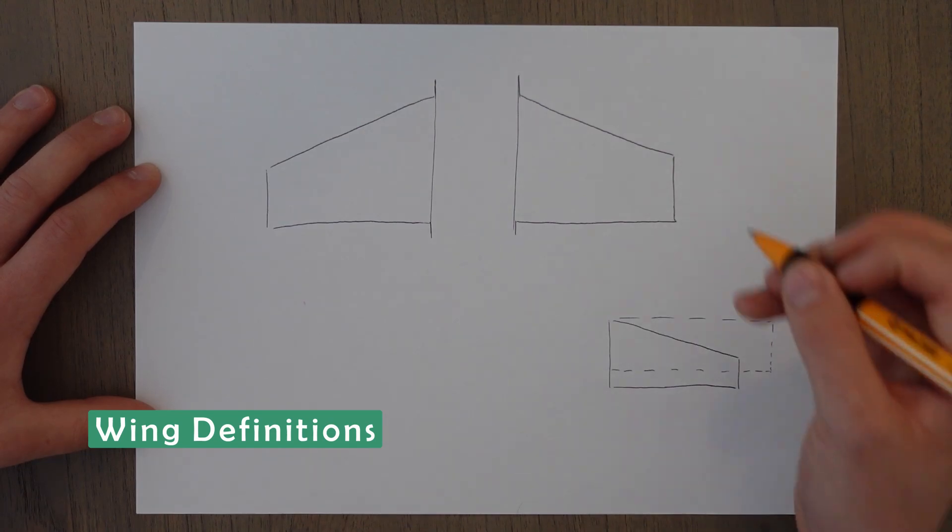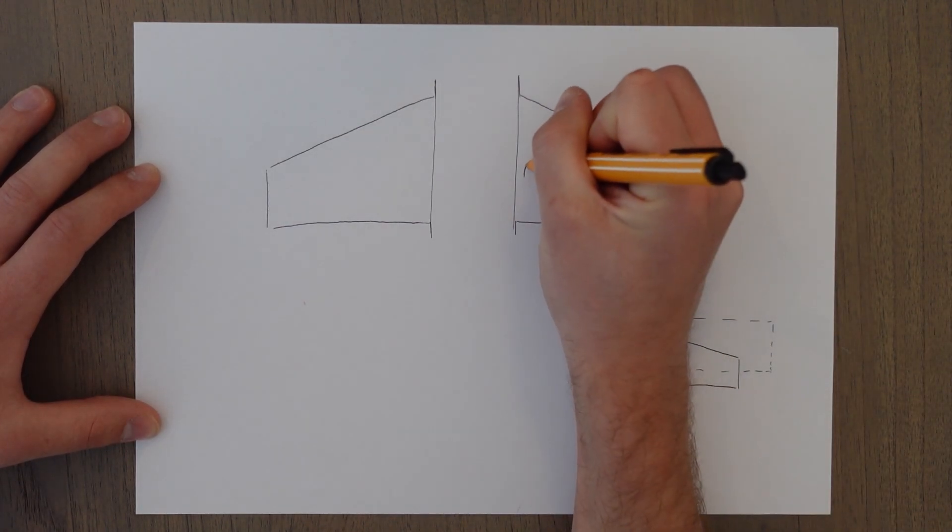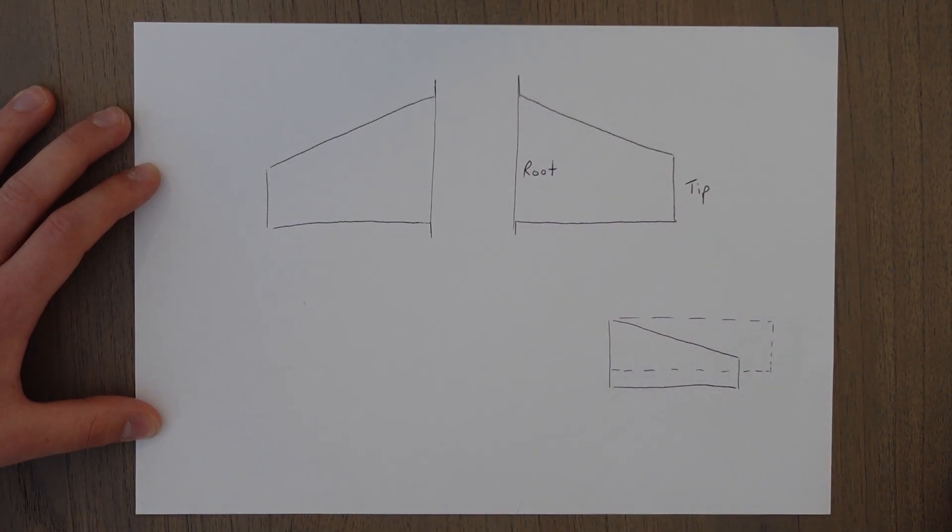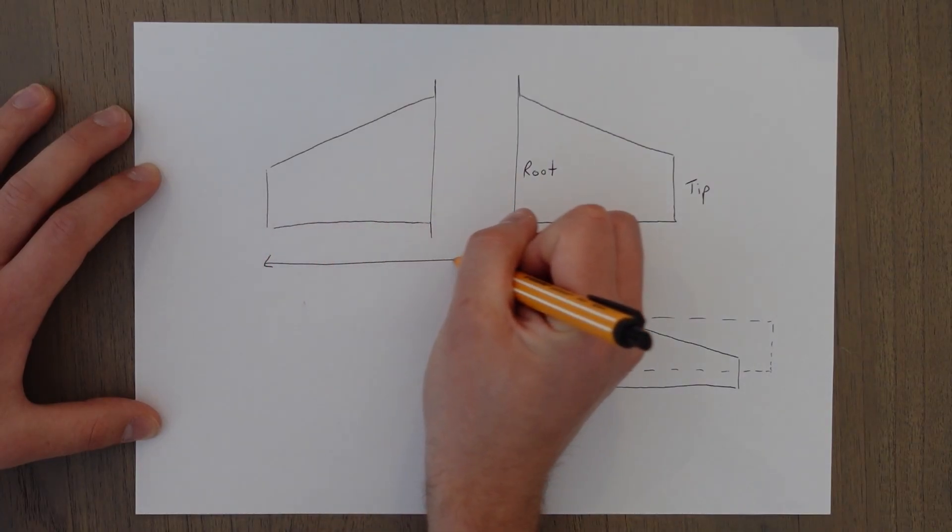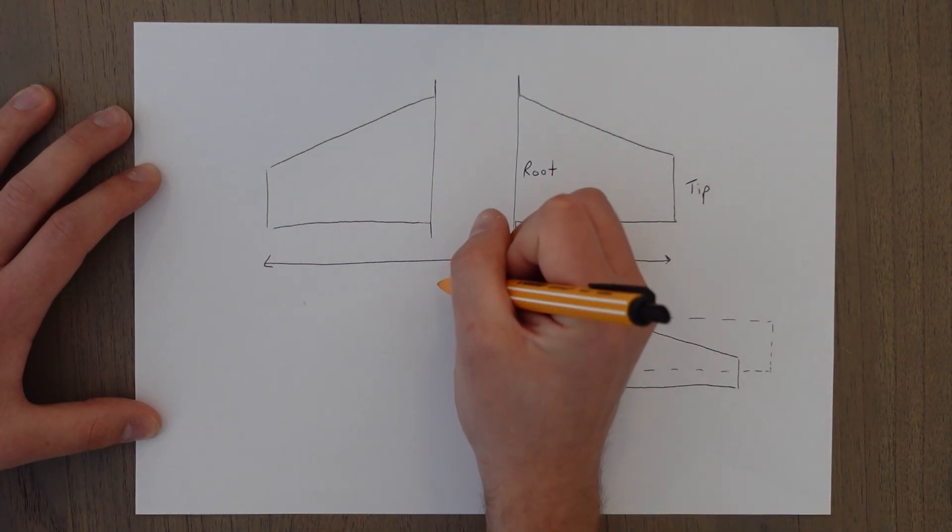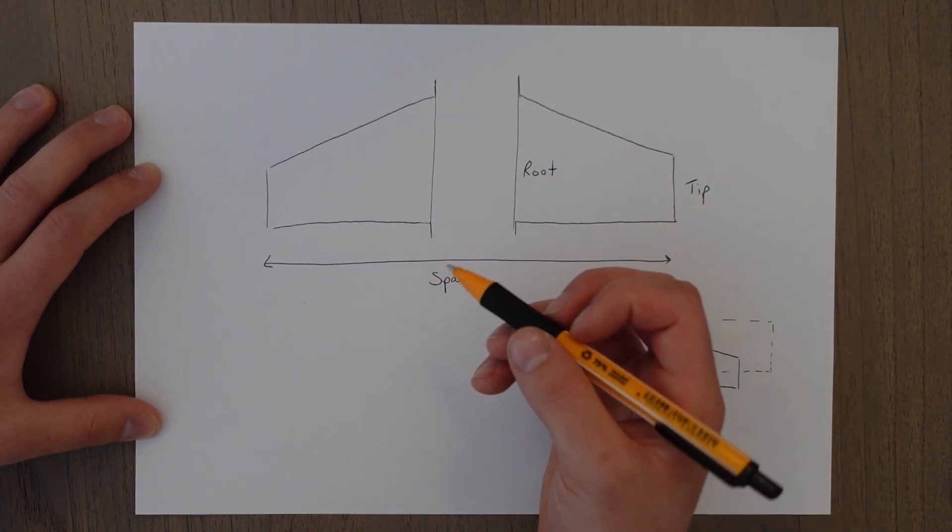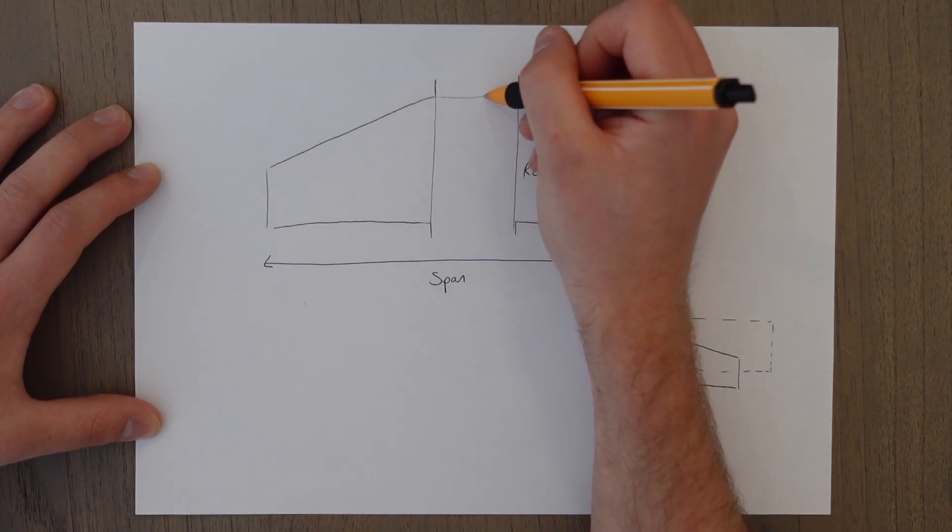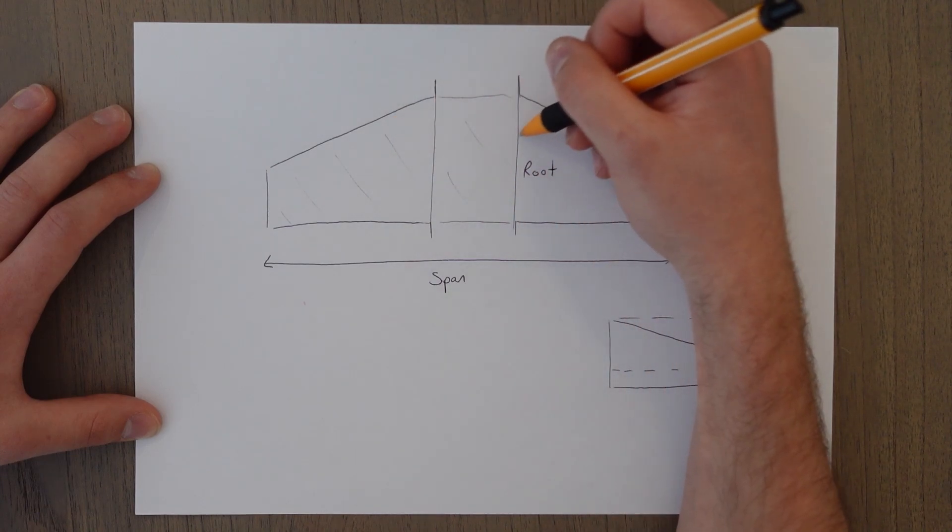So first of all, this part of the wing is called the wing tip and the part attached to the fuselage is known as the wing root. The distance between both wing tips is known as the span or the wing span. The wing area is the area covered by the wings and also this middle part of the fuselage between them.